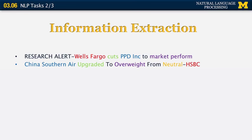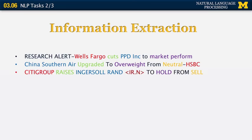Looking at more examples: China Southern Air upgraded to overweight from neutral, according to HSBC. The bank is HSBC. It has upgraded — changed the rating in a positive direction — for the company China Southern Air. The new rating is overweight and the old rating is neutral. There is a ratings institution, typically a bank, that changes the rating of a company from one rating to some other rating.